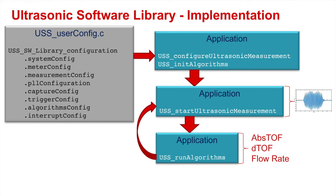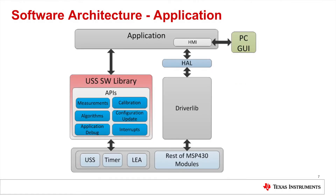These algorithms provide all the information needed by the application, including the absolute and differential time of flight and the flow rate. The MSP430 Ultrasonic software library includes complete source code for a sample application, which not only shows how to use the library APIs, but it also allows developers to modify the system easily using a GUI.